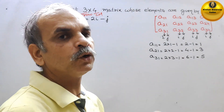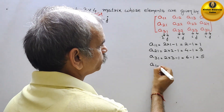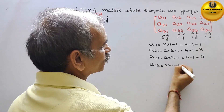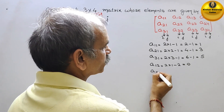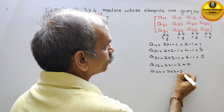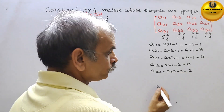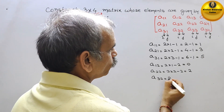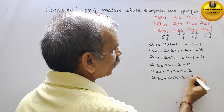Likewise we do the others also. Next comes A(1,2): 2 into 1 minus 2, that is equal to 0. Next comes A(2,2): 2 into 2 minus 2, that is equal to 2. Next is A(3,2): 2 into 3 minus 2, that is equal to 4.